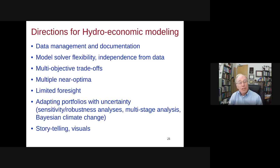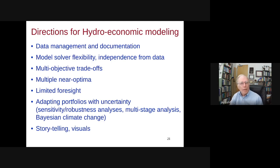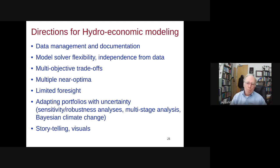We traditionally have an interesting problem with representing foresight. Pure optimization models assume perfect hydrologic foresight — you can see floods and droughts coming. That helps maybe 5 to 10% better than no foresight, which is a lot. We have limited foresight studies to better represent more realistic amounts of hydrologic foresight, and we're doing more robust sensitivity analyses with multi-stage and two-stage optimizations to separate capital from operating decisions and look at things over time with uncertainty in a more formal way.